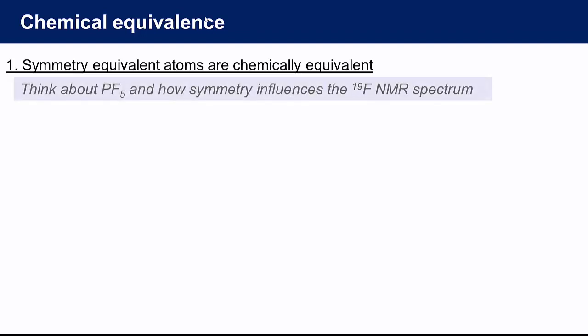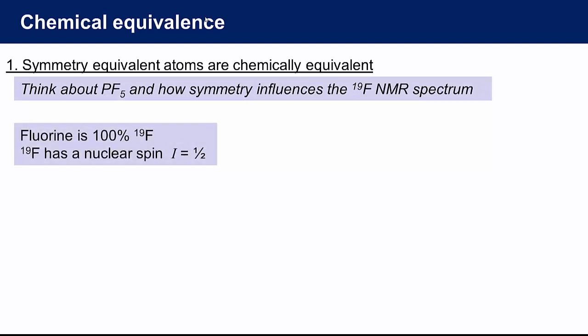Let's consider the main group compound phosphorus pentafluoride. It makes a change from organic compounds and fluorine is a mono isotopic element. All naturally occurring fluorine is fluorine-19 which has a nuclear spin of one half just like hydrogen. And phosphorus, well that's a mono isotopic element as well. All naturally occurring phosphorus is phosphorus-31 which also has a nuclear spin of one half again just like hydrogen.